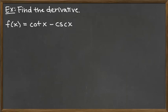To find the derivative of the function cotangent of x minus cosecant of x, we simply need to use the difference rule for derivatives. Each of those derivatives in the subtraction are things you need to have memorized.